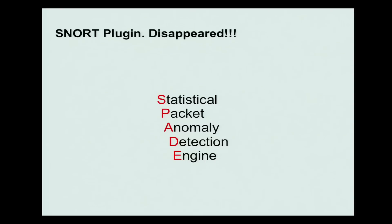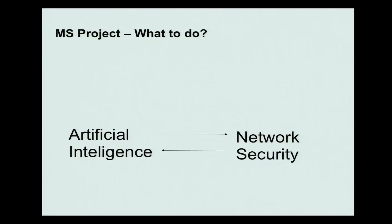Spade uses probability — Bayes' rule, actually — to identify whether an attack has occurred or not. And then if there's an anomaly, it can flag the attack.